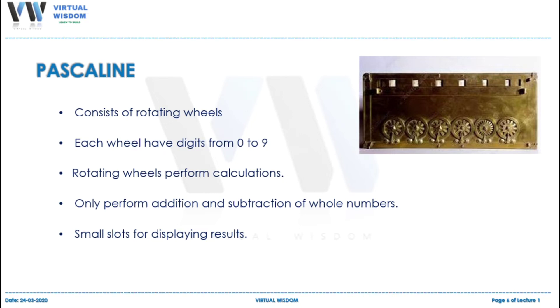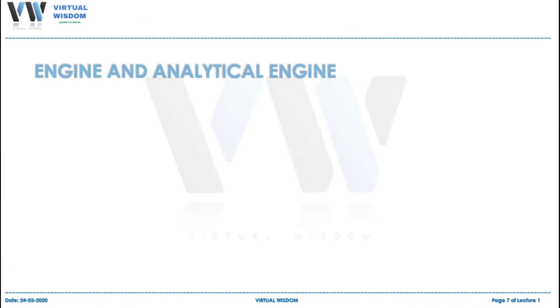This device can only perform addition and subtraction of whole numbers. It also had small slots which were used for displaying the final results. Abacus, Napier's Bone, and Pascaline were only used for small calculations.